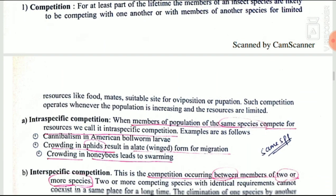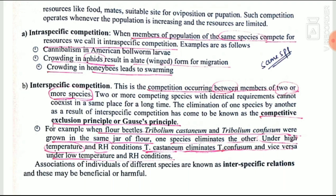First is competition. Insects compete with each other for food, water, space, site of oviposition, or for mate. This competition is of two types: intraspecific and interspecific. Intraspecific competition occurs between members of the same species — examples include cannibalism in Helicoverpa, crowding of aphids resulting in winged forms for migration, and crowding of honey bees leading to swarming. Interspecific competition occurs between two different species.